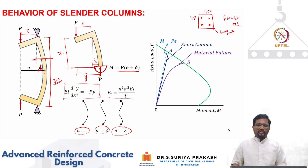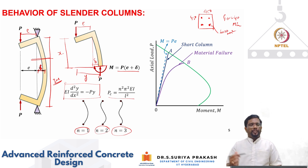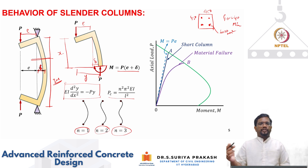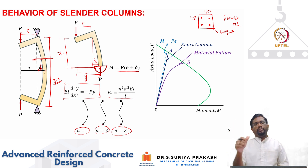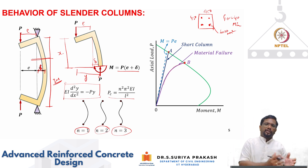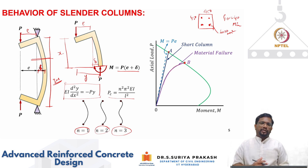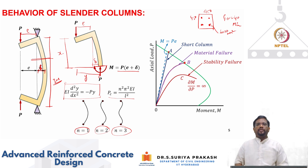For the same cross section, if we increase the column length from 3 meters to 10 meters, delta starts increasing. As more load is applied, the deflection profile increases, so the additional P-delta bending moment nonlinearly increases, and the load-moment curve deviates from linear. If we further take the same cross section with a length of 30 meters, the column will not reach material failure - before it can, the slope dP/dM will become zero, indicating instability.